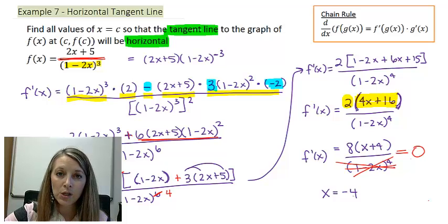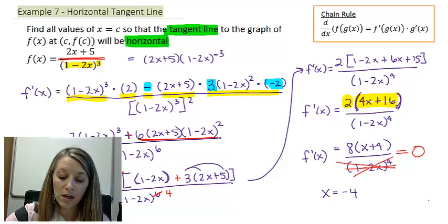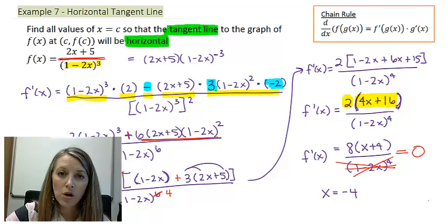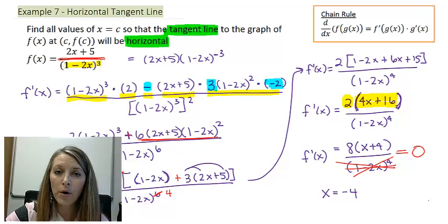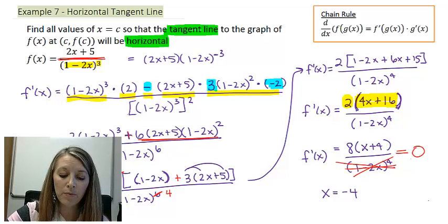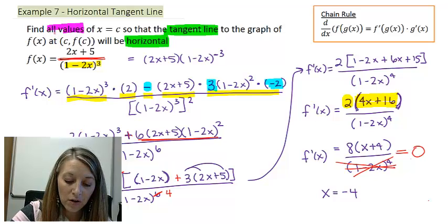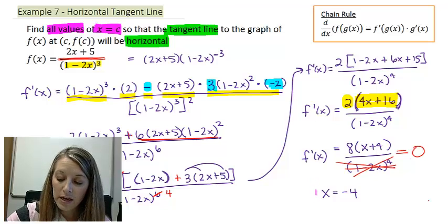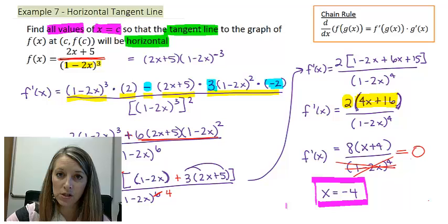Now, I put this exact wording in here so you can be familiar with it. It looks a little bit confusing. Find all values of x equals c so that the tangent line to the graph of our function at (c, f(c)) is horizontal. So is that asking for an x value, a c value, a value, a point, or what is it actually asking for? It's actually only asking for the x value. Find all values of x equals c. So this right here then is our final answer.